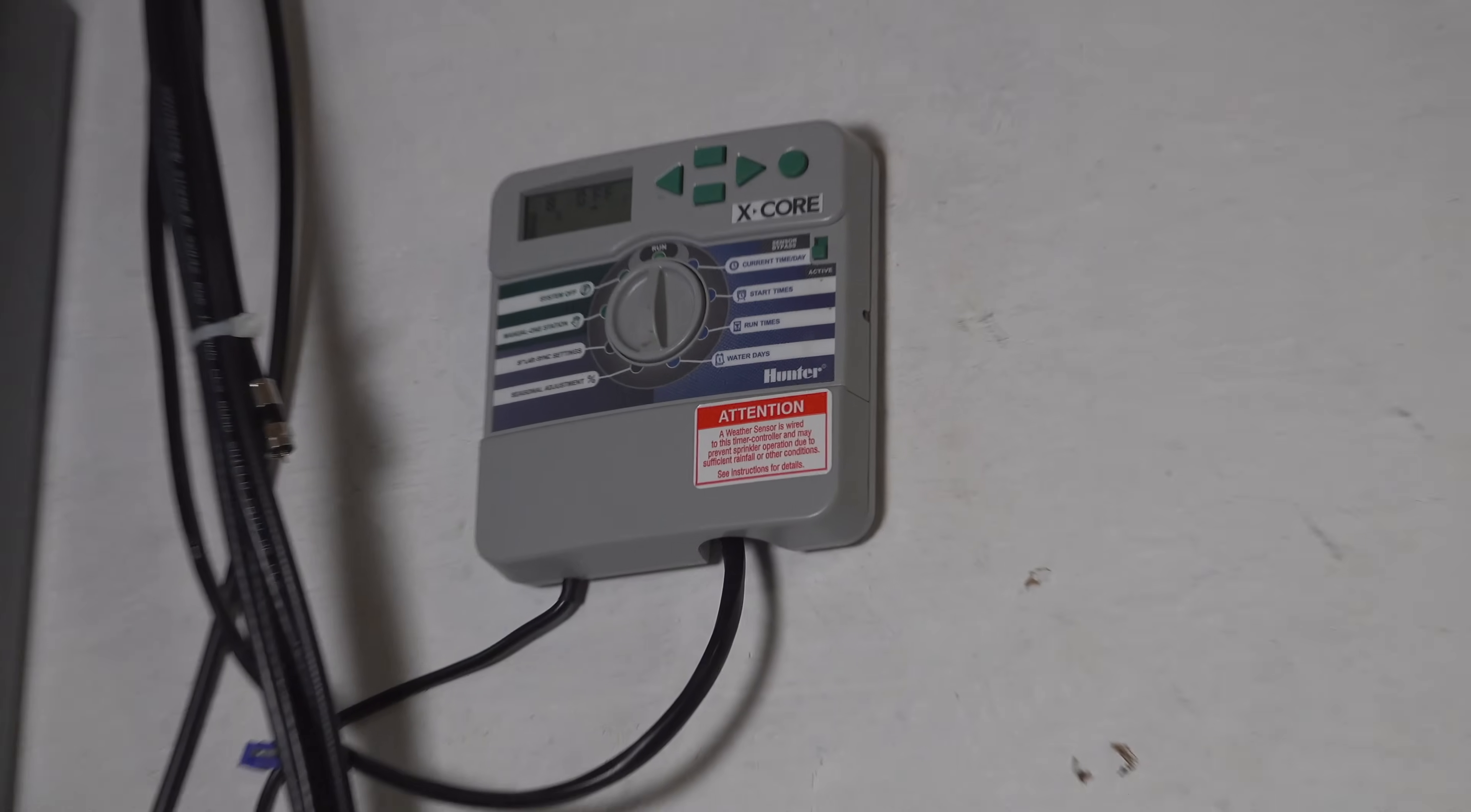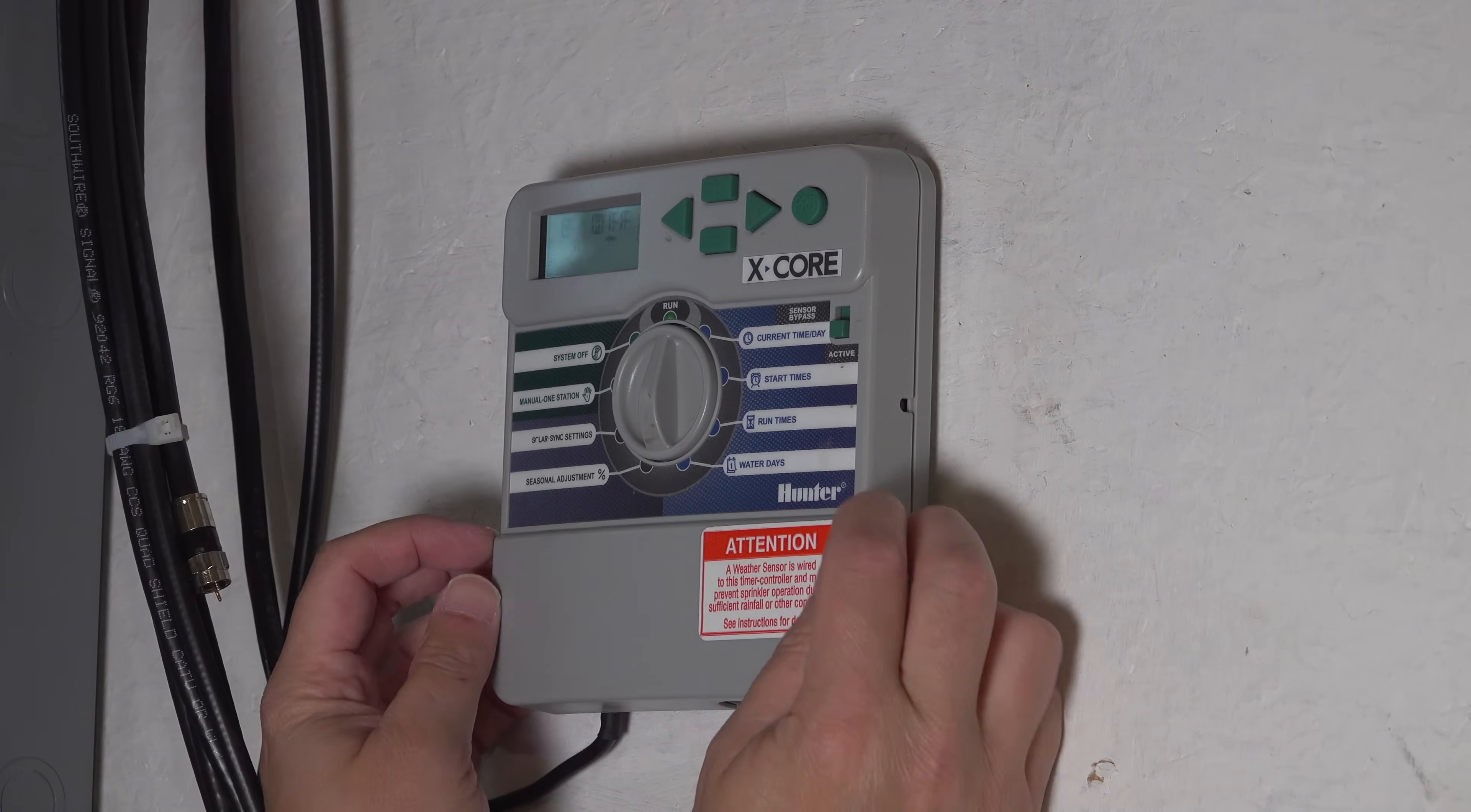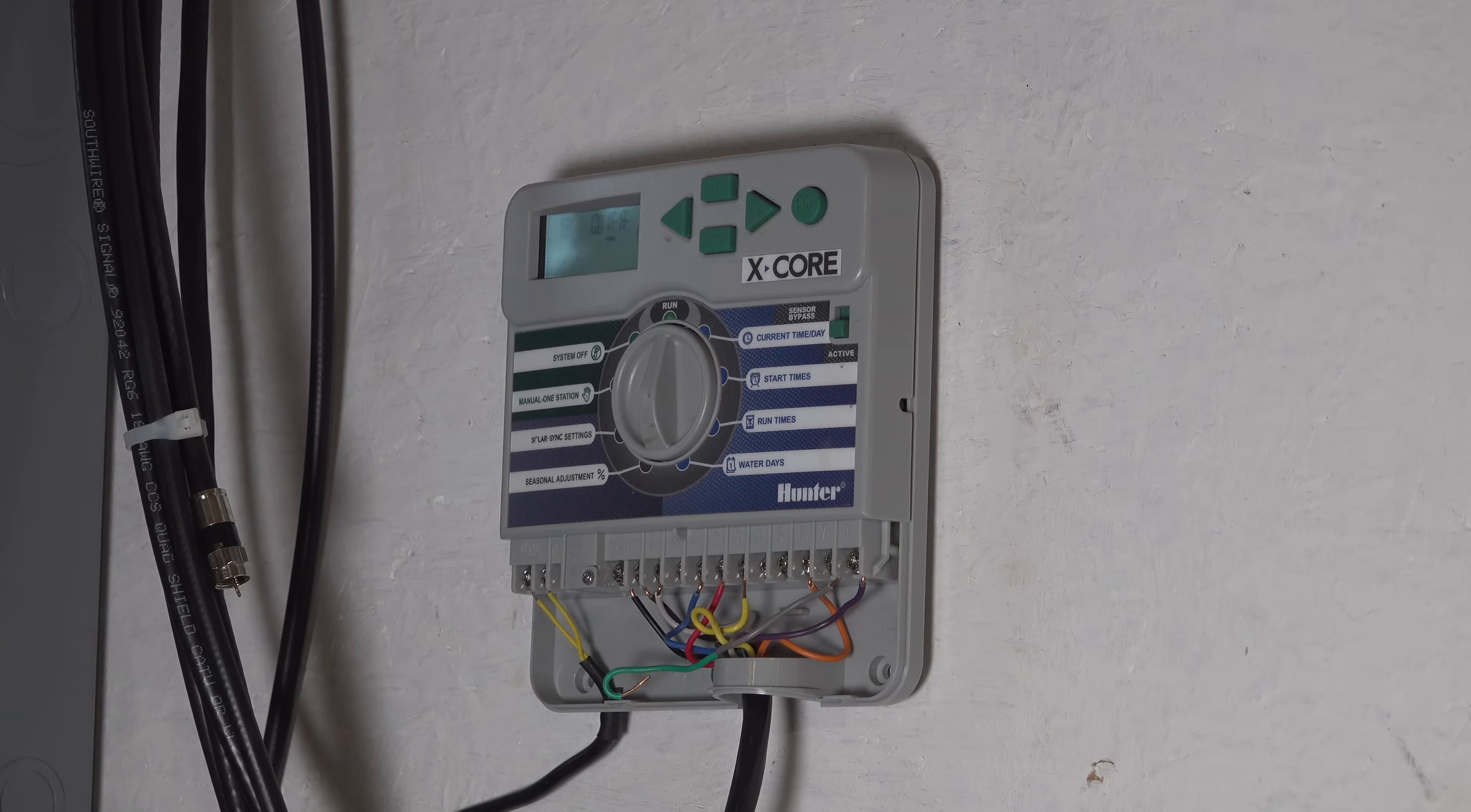You want to start by removing the access cover on your existing controller. This is easy to do. It usually just slides or pops off.